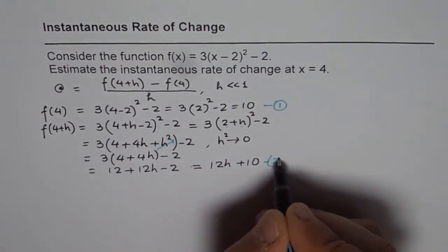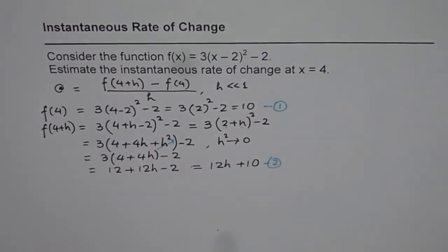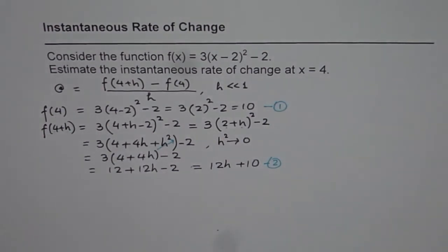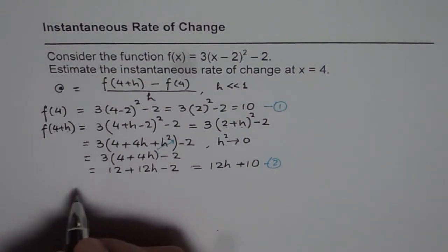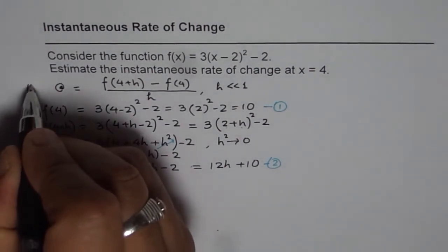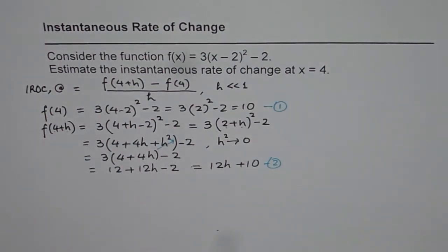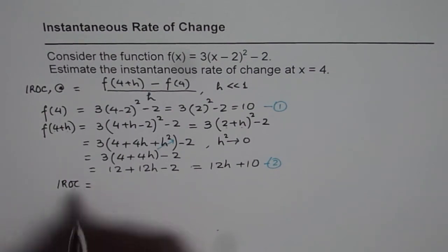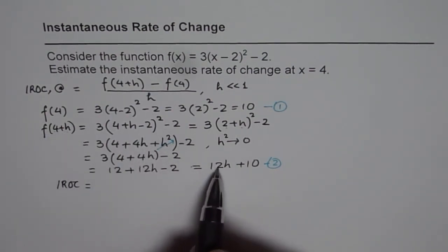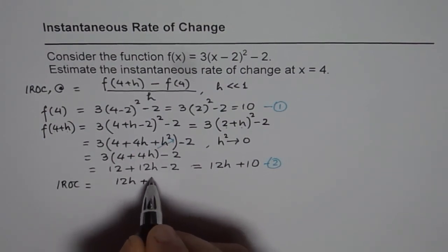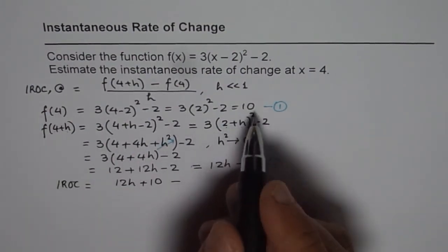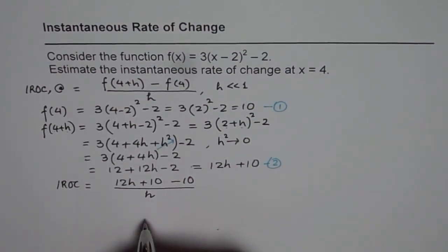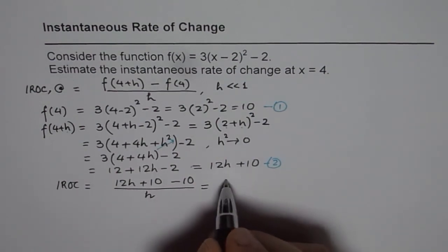Now instantaneous rate of change is their difference divided by h. So instantaneous rate of change is equal to f(4 + h) which is 12h + 10, take away f(4) which is 10, divided by h. So in this case you get 12h divided by h which equals 12.